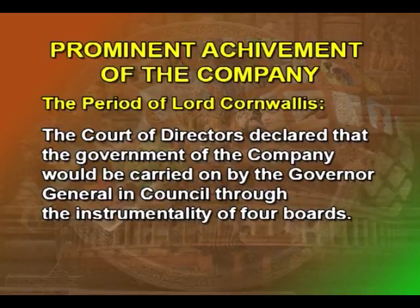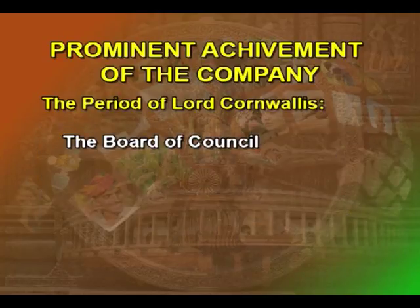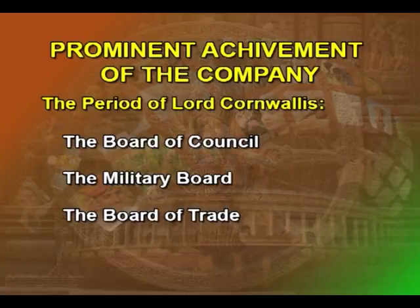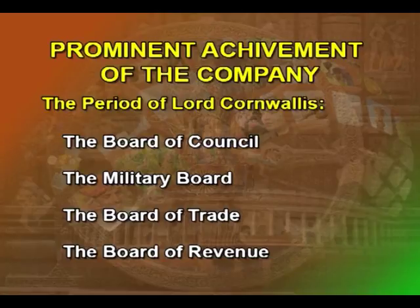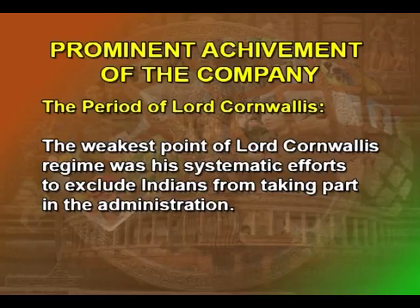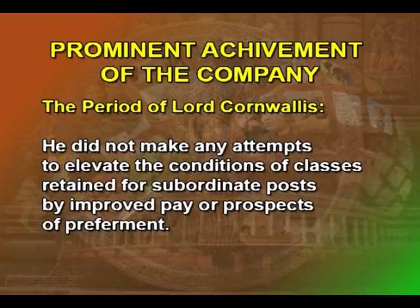In the same year, the Court of Directors declared that the government of the company would be carried on by the Governor-General in Council through the instrumentality of four boards: the Board of Council itself, the Military Board, the Board of Trade, and the Board of Revenue. They continued till the last days of the company's rule. However, the weakest point of Lord Cornwallis's regime was his systematic effort to exclude Indians from taking part in the administration. He did not make any attempts to elevate the conditions of classes retained for subordinate posts by improved pay or prospects of preferment.